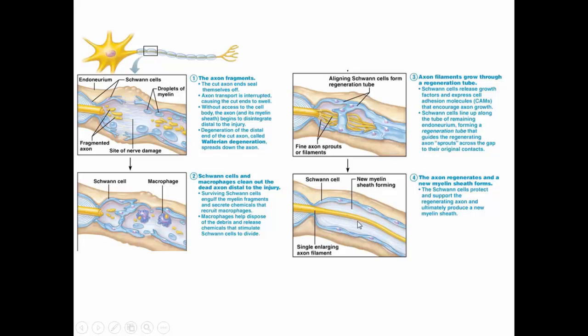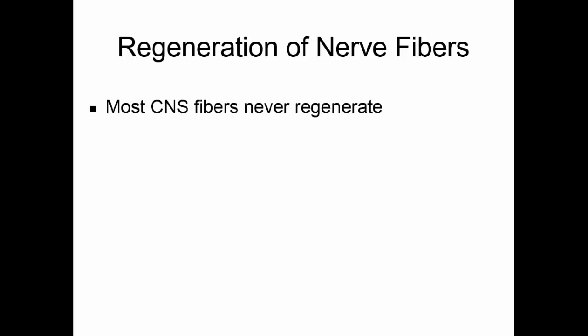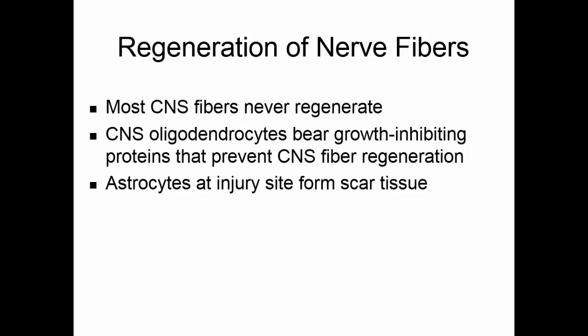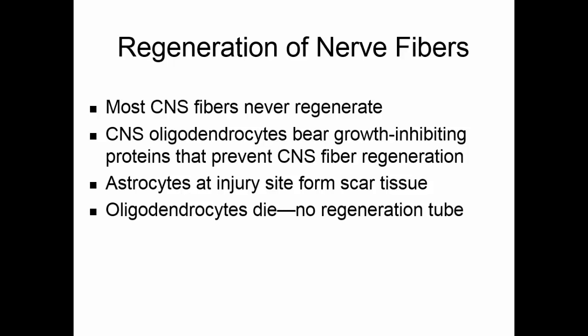Most central nervous system fibers do not regenerate for several reasons. The oligodendrocytes have growth-inhibiting proteins on them to prevent CNS fiber regeneration — this is somewhat protective, as we don't want new neurons forming randomly in the brain. The astrocytes, which are the cleanup crew in the brain, work more slowly and don't clean up as quickly, so scar tissue tends to form. And when oligodendrocytes are damaged they tend to die, so there's no regeneration tube and no direction for the new axon to grow.